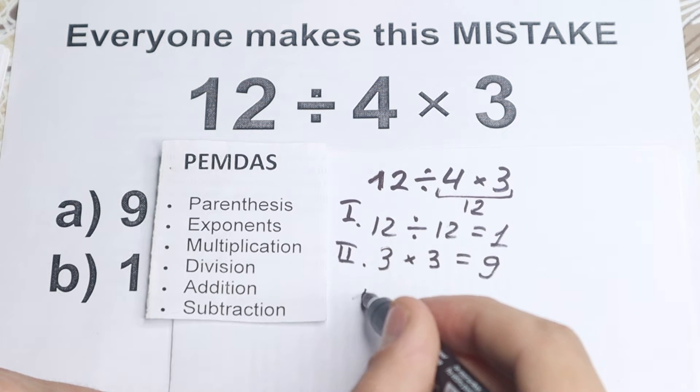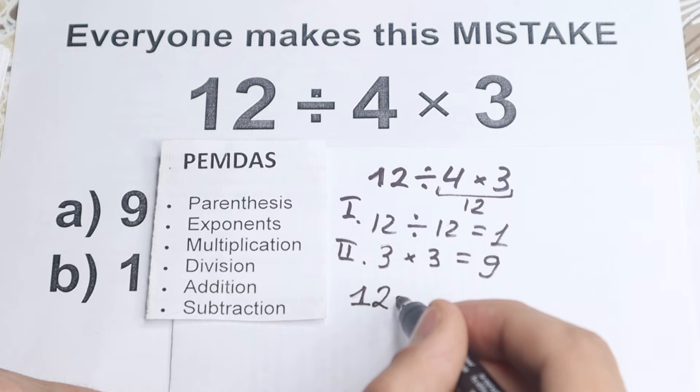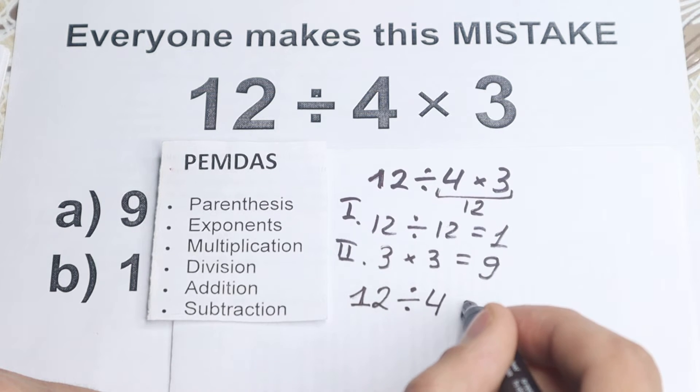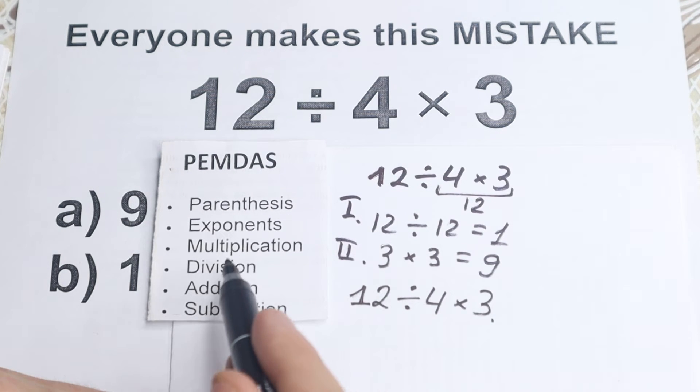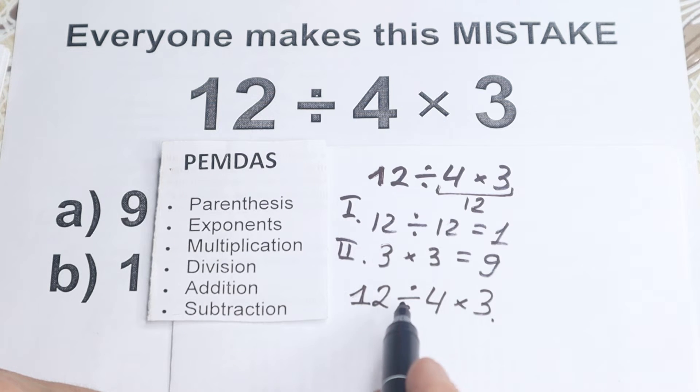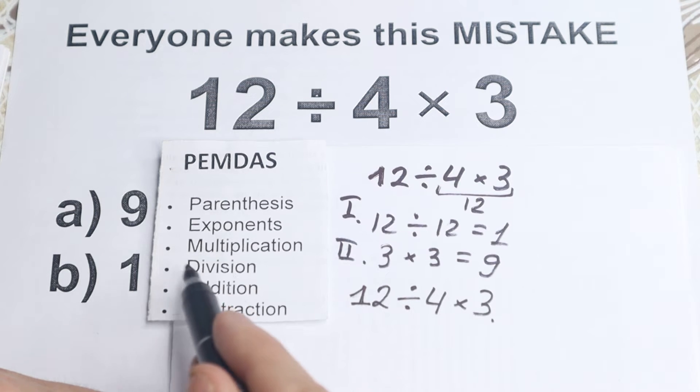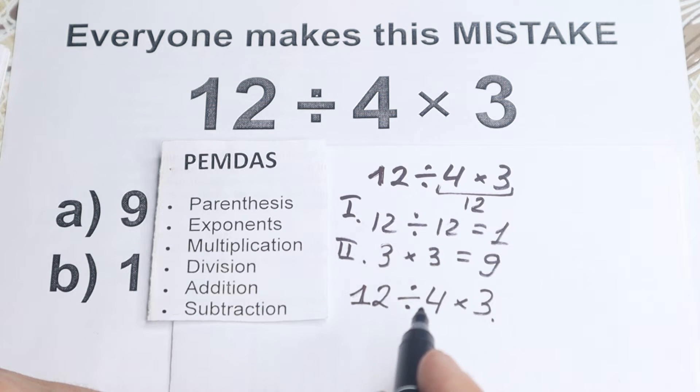Because if we have this problem, I write it once more, 12 divided by 4 and times 3, we need to look, we have multiplication, division part. Are there any multiplication and division signs? Yeah, I see this one and this one, which is really great. So we work with this group.